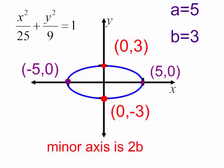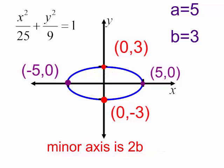Now the length of the minor axis is 2 times b. In this case, b is 3. So 2 times 3 is 6. Or you may notice from our graph, if I go up 3 and if I go down 3, that is a total of 6 units.